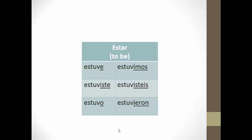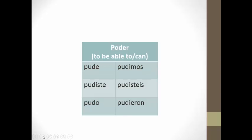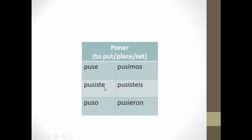Once you add those endings, here's what your conjugation looks like: estuve, estuviste, estuvo, estuvimos, estuvisteis, estuvieron. For poder, put PUD in all forms and add the endings: pude, pudiste, pudo, pudimos, pudieron. The next verb is poner, which means to put, place, or set. Put PUS in all forms: puse, pusiste, puso, pusimos, pusieron.